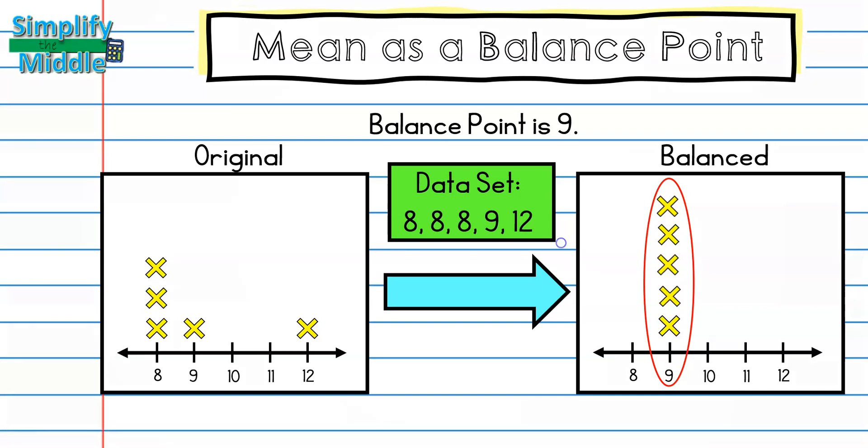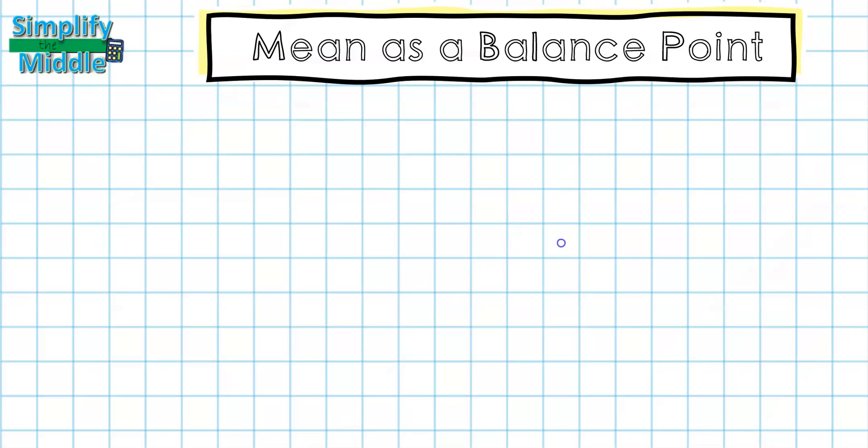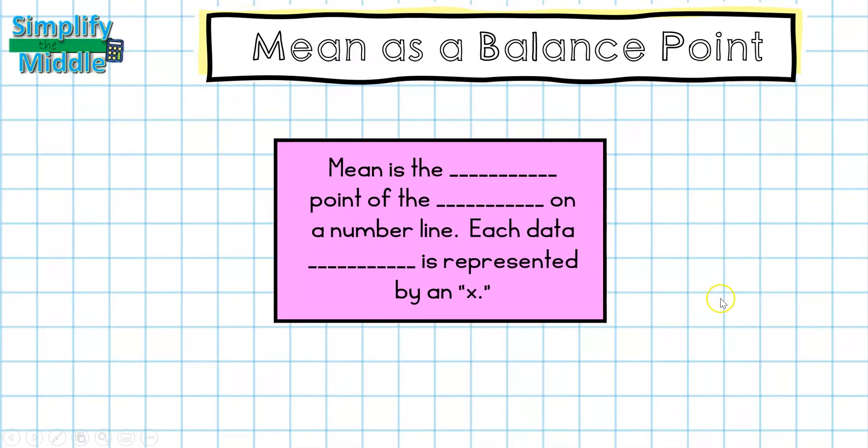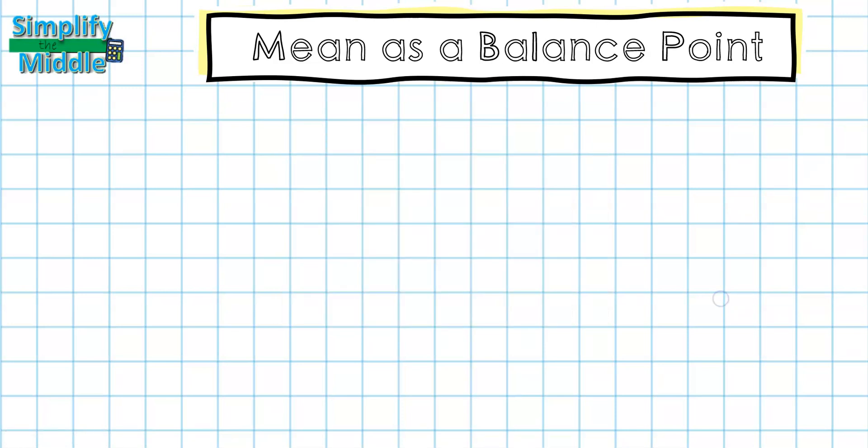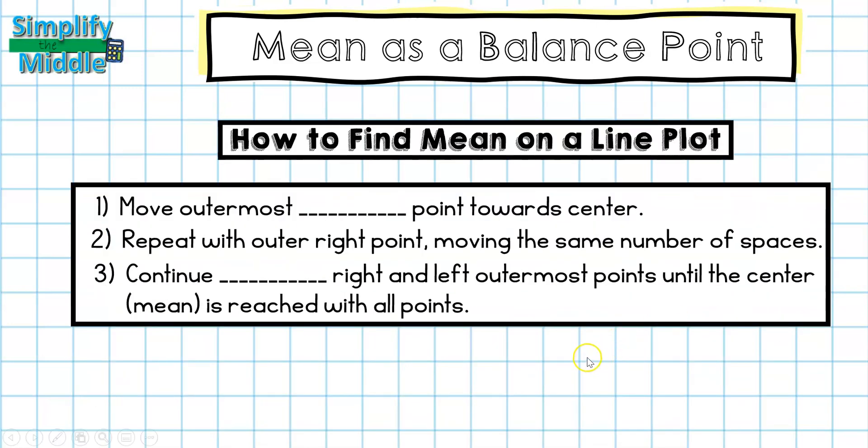Let's recap. We know that mean is the balance point of the data on a number line. Each data point is represented by an X on our line plot.